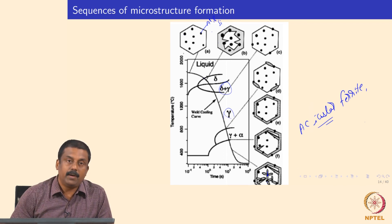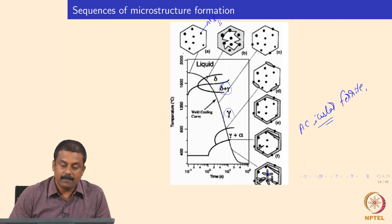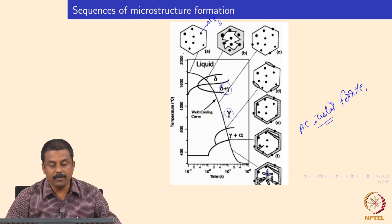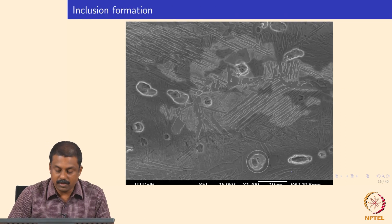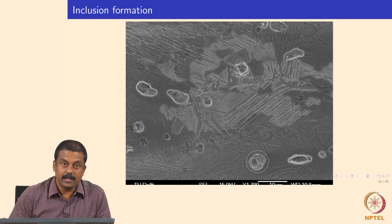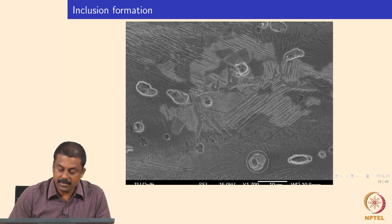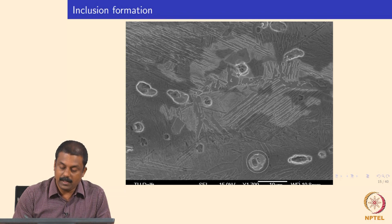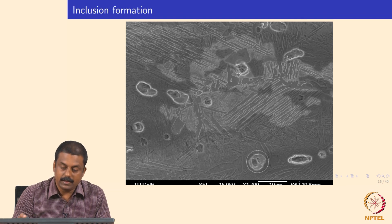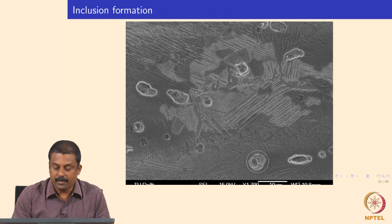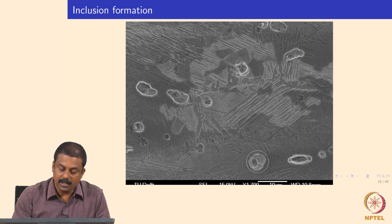Understanding the nucleation and formation mechanism is very important to control the microstructure during subsequent cooling to room temperature. Regarding the inclusion formation mechanism, the first reaction that happens when the weld pool solidifies is inclusion formation. Inclusions can form at very high temperatures. When you expose the liquid pool to the atmosphere or shielding gas — if it contains oxygen contamination — elements like aluminum and silicon can readily combine and form oxides.